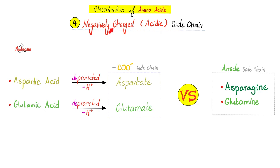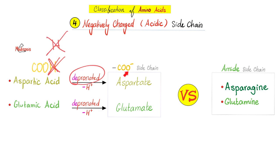Group number four: the negatively charged — these are acidic. Aspartic acid, glutamic acid. They are acidic. Aspartic acid can give you aspartate; glutamic acid can give you glutamate — when you deprotonate them, meaning remove an H. Aspartate and glutamate contain COO negative because aspartic acid and glutamic acid had COOH. When you remove the H — hashtag deprotonation — you remove the proton, ending up with COO negative. So these are COO-containing, while asparagine and glutamine from the previous group were amide-containing.